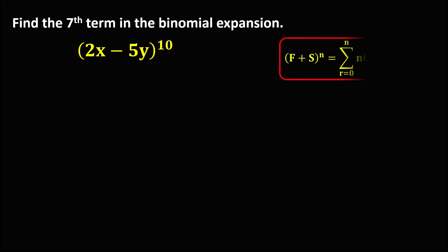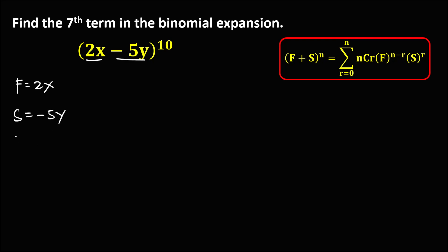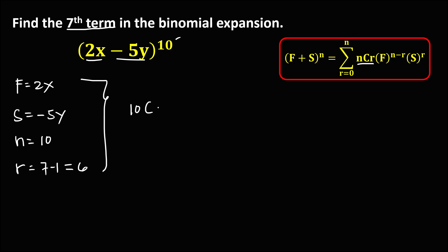For the next problem, the first term is 2x and the second term is negative 5y. n, the exponent, is 10. Since we're looking for the seventh term, r equals 7 minus 1, so r equals 6. To find the seventh term, we have 10 choose 6 times the first term 2x to the power n minus r, times negative 5y to the power r, which is 6.